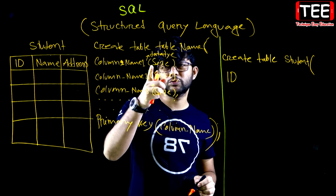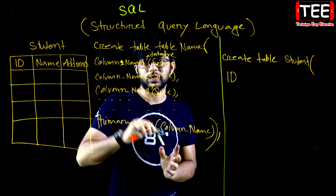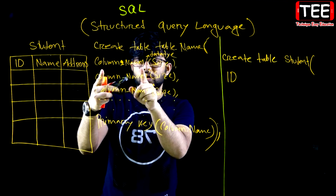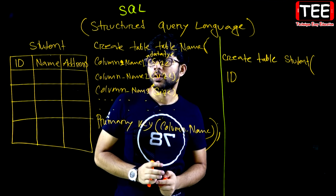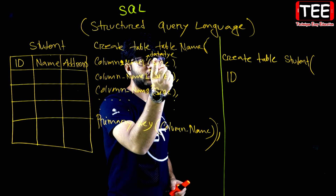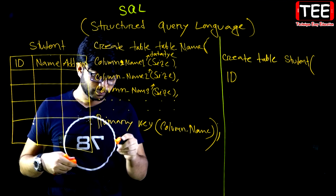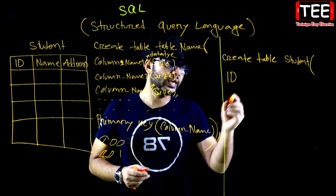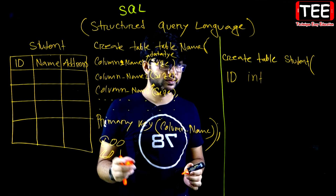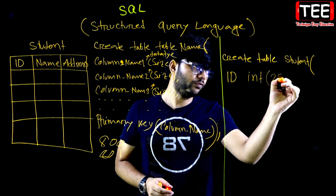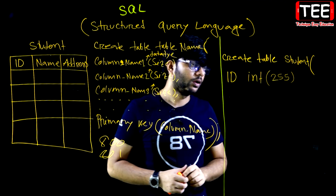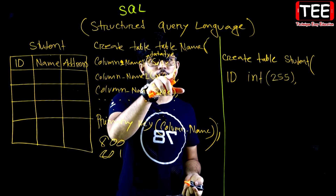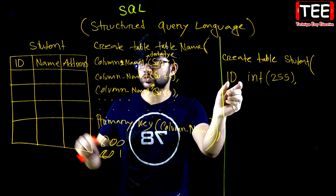The previous video is going to look at the data type — you will write a data type. Column name one will be the id. The data type I said — the size to meet 255. Provide the size to meet 255. The column name is column name one — the first column name.